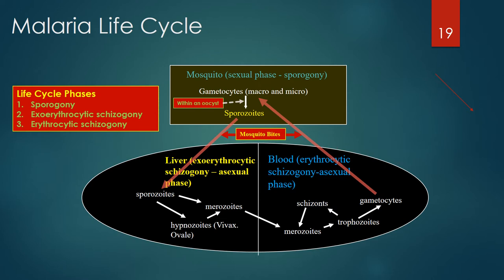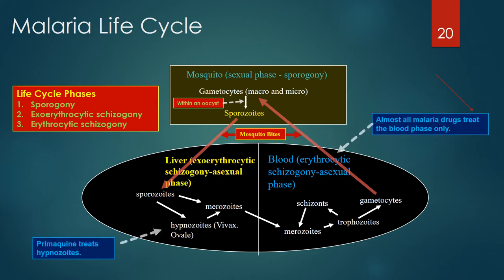These schizonts eventually burst, releasing merozoites into the bloodstream that subsequently enter more red blood cells. Eventually, after several cycles of merozoites, trophozoites, and schizonts, gametocytes are formed that are infectious to mosquitoes when they bite an infected human, completing the entire life cycle. This blood phase is called erythrocytic schizogony. Almost all malaria drugs treat the blood phase of malaria. Plasmodium vivax and ovale leave latent hypnozoites in the liver that can reemerge as malaria relapses months to years later. Primaquine treats the hypnozoites in the liver.